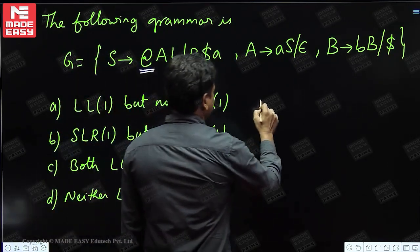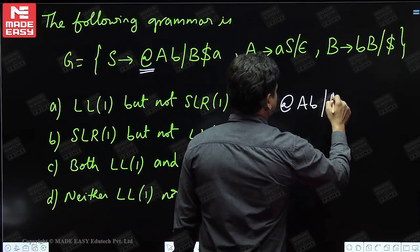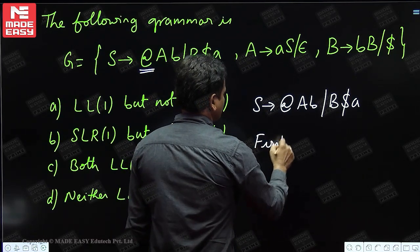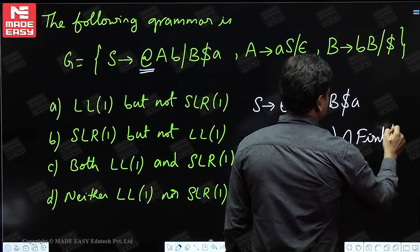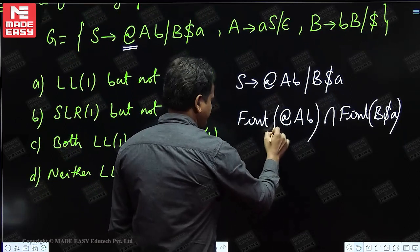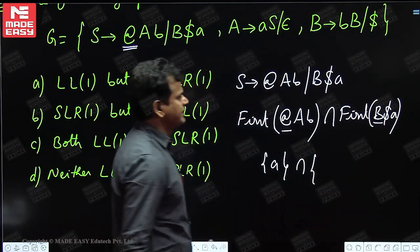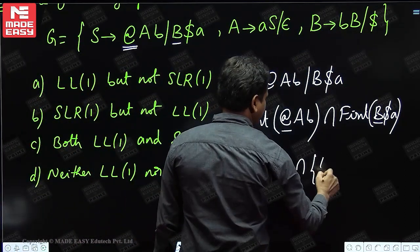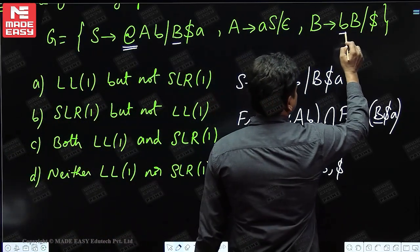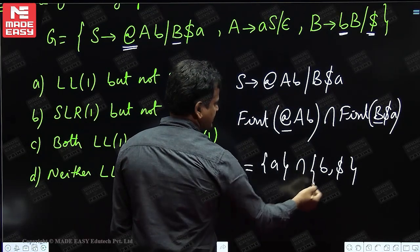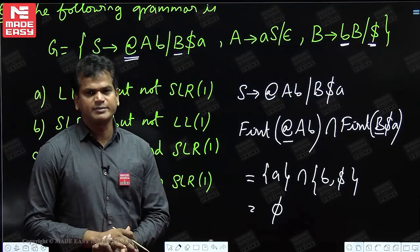Find first of (at-the-rate AB) intersection first of (B dollar A). First of (at-the-rate) is at-the-rate only, since it is a terminal. First of (B dollar A) is first of B. First of B — B has two productions, so first of B is {B, dollar}. Therefore, {at-the-rate} intersection {B, dollar} is empty. We do not have any common elements in S's productions, so regarding S there are no multiple entries. This is valid.